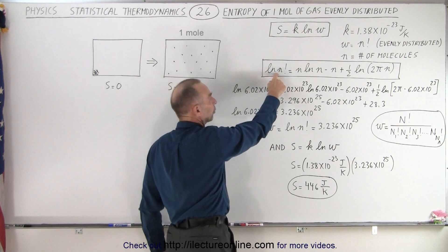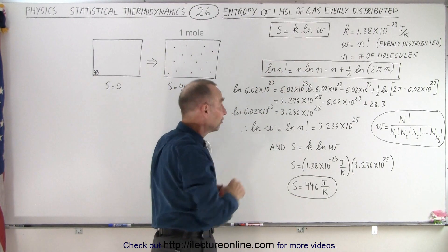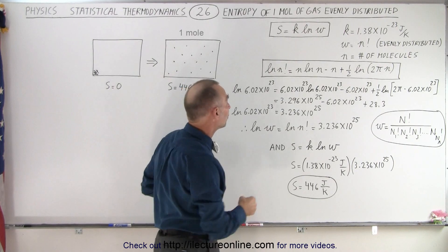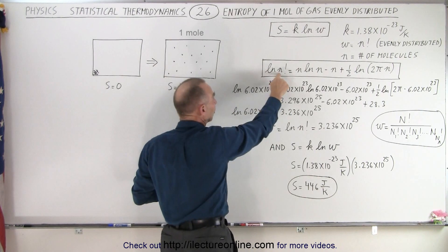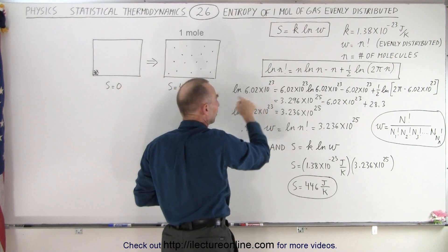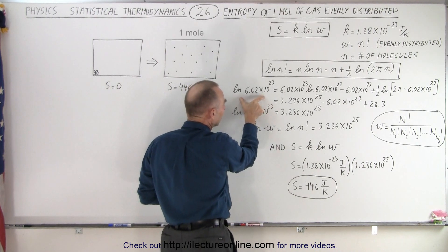Here's the equation for Sterling's approximation that we showed you how to use in the previous video. And so what we're going to do is replace n by the number of molecules in the volume. In this case it would be Avogadro's number, 6.02 times 10 to the 23. So we take the natural log of that number.